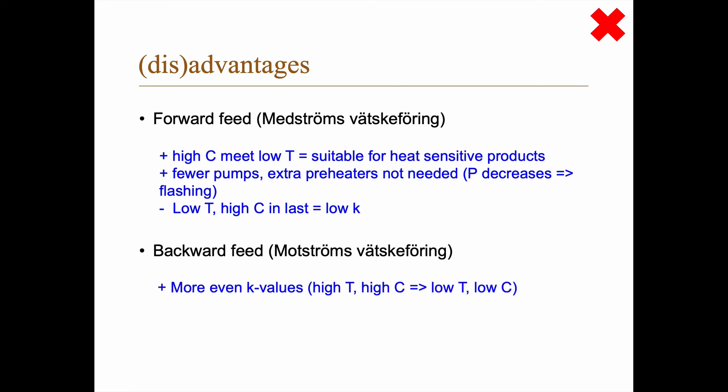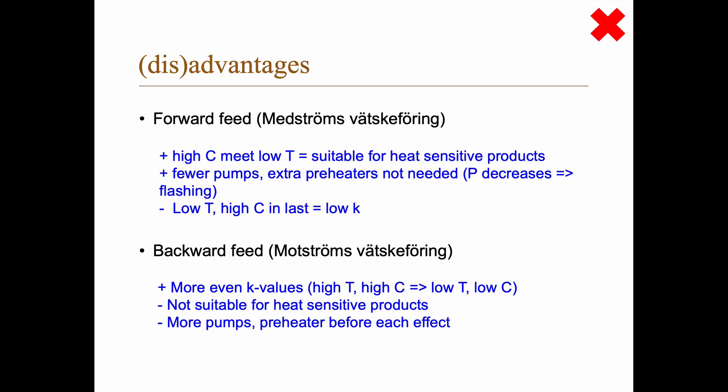With backward feed, you get more even K values, because on one side you have high temperature meeting high concentration, and on the other side you have low temperature meeting low concentration, so you get intermediate values throughout — more similar values across the different evaporators. However, this is not suitable for heat sensitive products, because high temperature and high concentration together can damage your product. You also need more pumps, because you're moving the feed from low pressure to higher and higher pressure. And since the boiling point increases as you go from lower to higher pressure, you may also want to add pre-heaters between the evaporators.